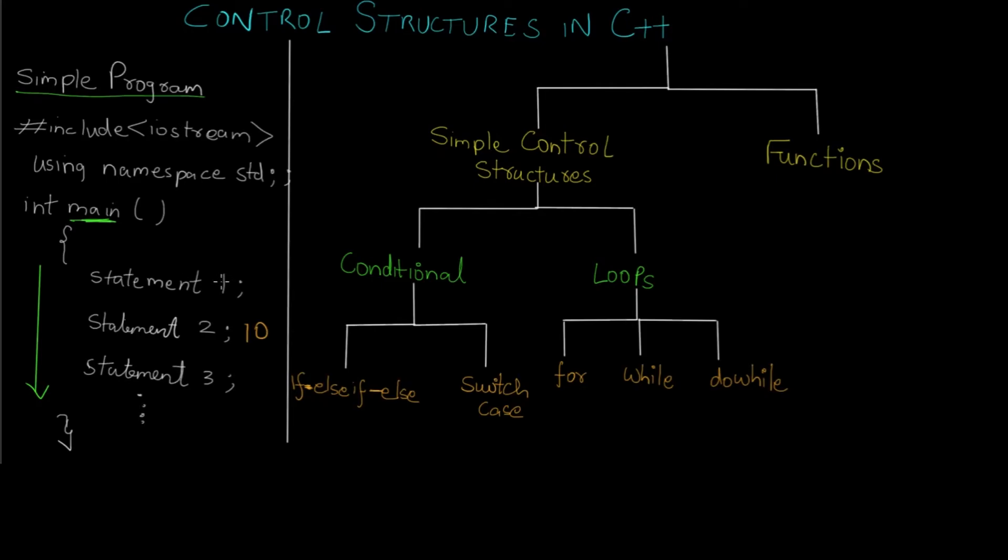Say for example you want to perform an addition operation of two variables and you are going to be using that many times throughout the program. Instead of writing the addition operation again and again, you can create what is called a function in C++ and then use it over and over again. That will be more beneficial and efficient. That is the benefit of control structures in C++.